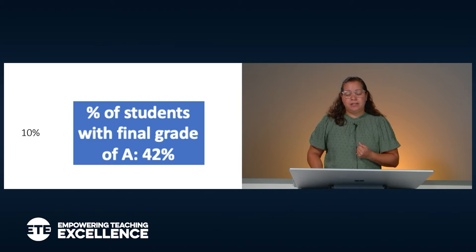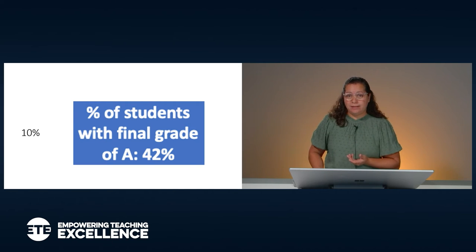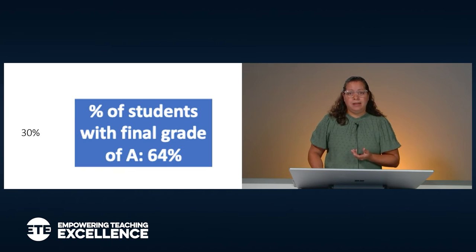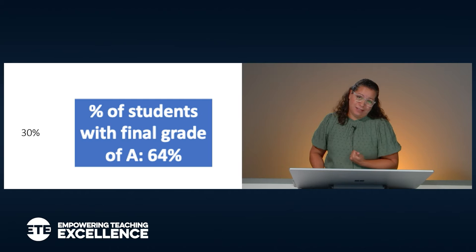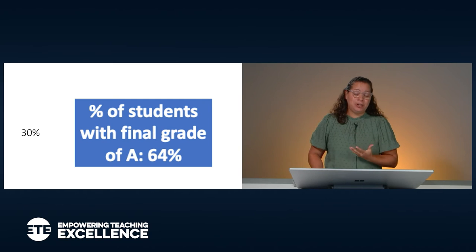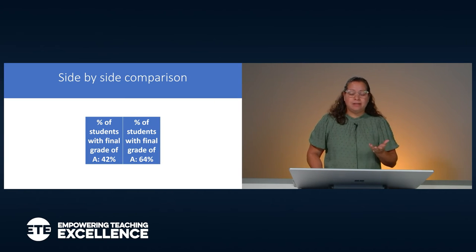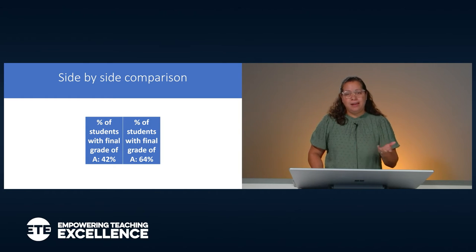So one of my semesters, I had attendance set at around 10%, and the result was that the percentage of students with a final grade of A was around 42% for that semester. Then the semester that I wanted to try out what would happen if I weighted attendance more heavily, I weighted it to 30%, and the percent of students with a final grade of A went up to 64%. So that's huge. This is a side-by-side comparison — the 10% is on the left and the 30% is on the right — and as you can see, that's a huge jump in the number of students who are upping their grades.